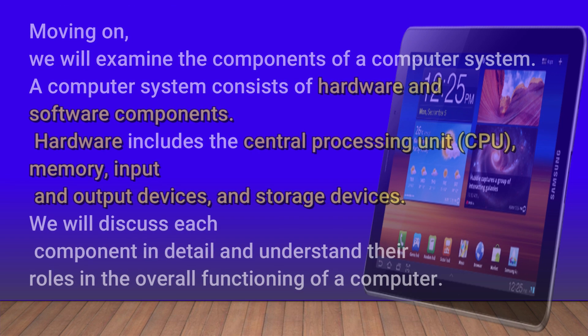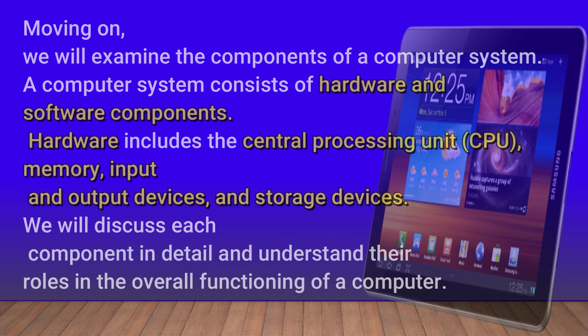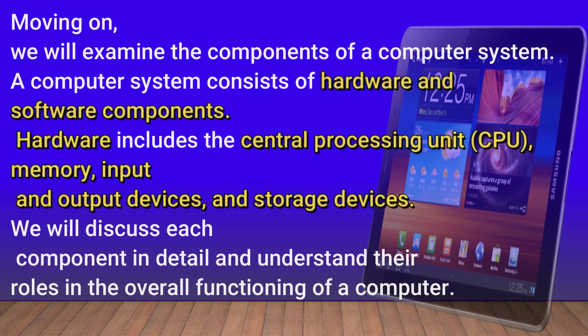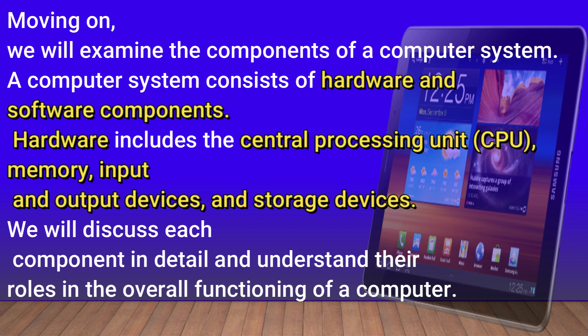Moving on, we will examine the components of a computer system. A computer system consists of hardware and software components. Hardware includes the central processing unit (CPU), memory, input and output devices, and storage devices.